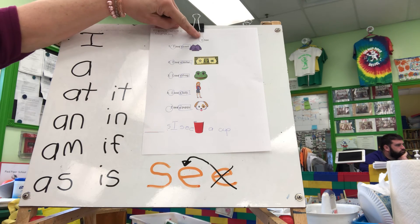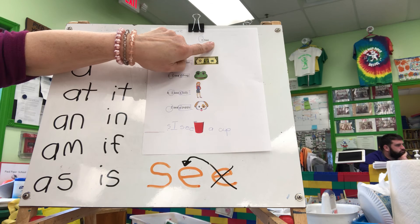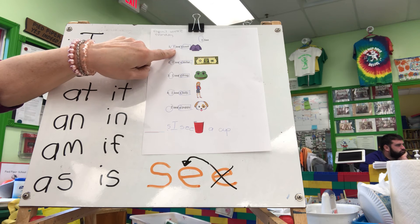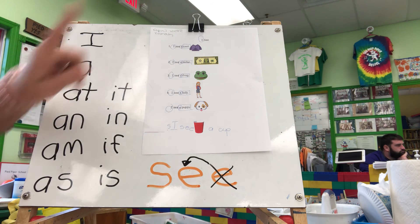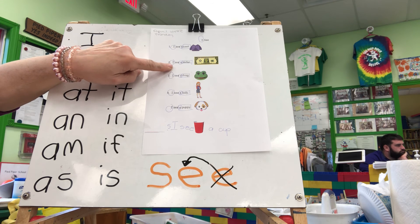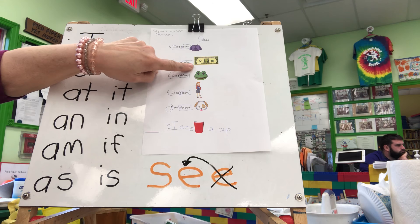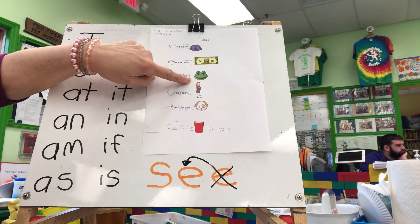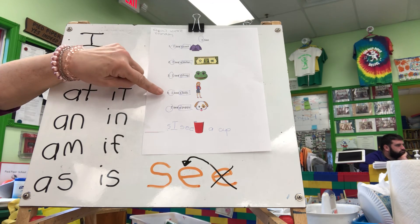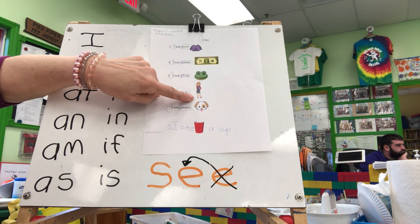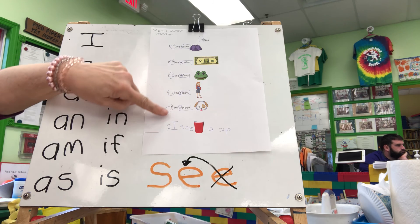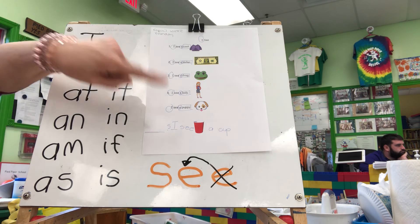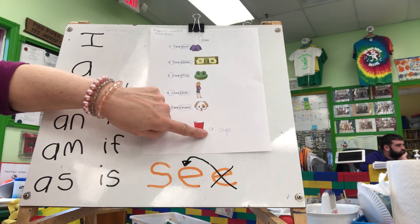Here we go. Put your pointer on the title — the title says, I see. Pointer up. Find number one, go underneath it, slide, glide, and read: I see a coat. Good job. Pointer up. Number two, slide, glide, and read: I see a dollar. Pointer up. Number three, slide, glide, and read: I see a frog. Pointer up, slide, glide, and read: I see a lady. Pointer up. Number five, slide, glide, and read: I see a puppy. Pointer up, slide, glide, and read — number five: I see a cup.